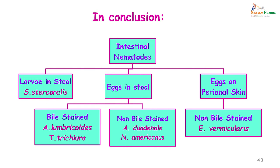To conclude: the intestinal nematode where you see larvae in the stool is Strongyloides stercoralis. The ones where you see bile-stained eggs in the stool are Ascaris lumbricoides and Trichuris trichiura. The non-bile stained ones are Ankylostoma duodenale and Necator americanus. Eggs found on the perianal skin are the non-bile stained Enterobius vermicularis eggs. Thank you; I hope you have understood intestinal nematodes.